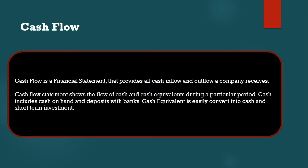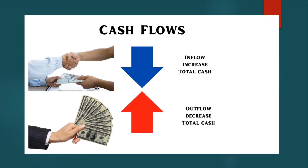We can easily understand where the money is going and how the cash flow increases or decreases based on the cash flow statement. Looking at the diagram here, you can see blue and red colors — blue represents inflow, which is increasing total cash, and red represents outflow, which is decreasing total cash.